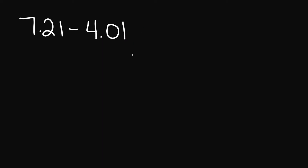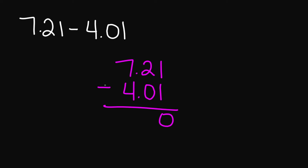Let's try 7.21 minus 4.01. Let's go ahead and line up our numbers. 1 minus 1 is 0, 2 minus 0 is going to be 2. Bring your decimal down. And then you have 7 minus 4, that's going to give you 3. So your final answer is 3.20.